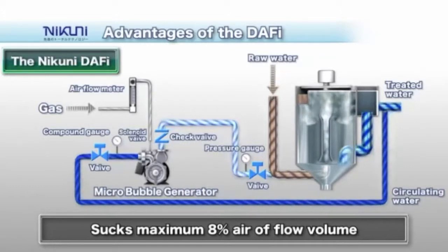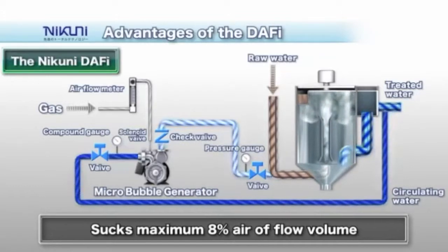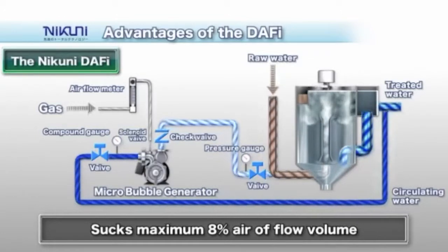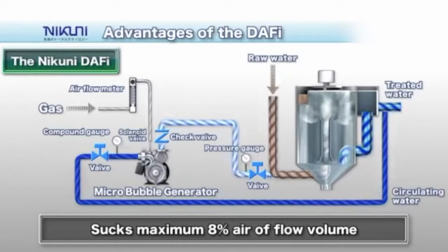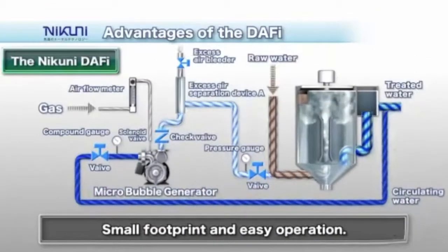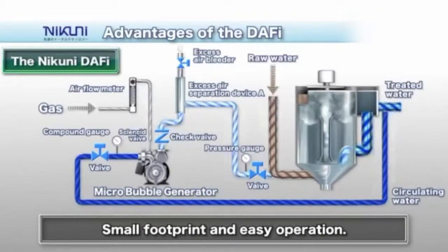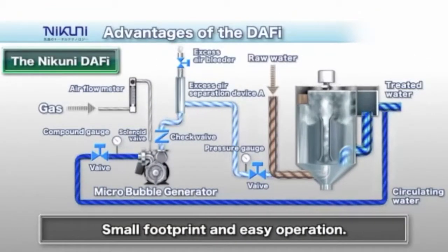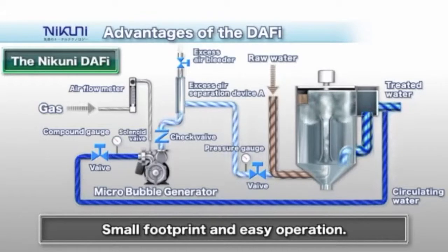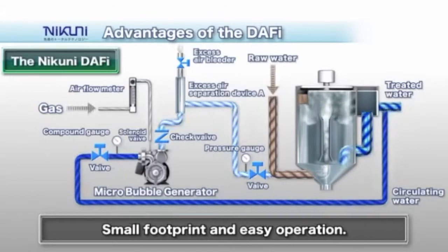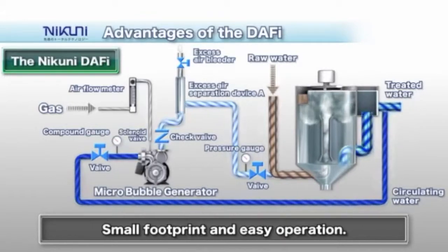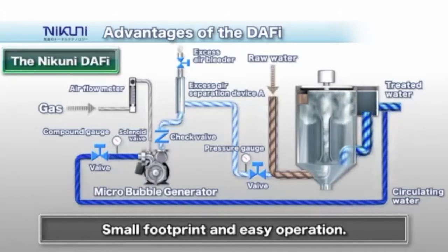To operate the micro bubble generator, first adjust the valve on the discharge side of the pump to the required pressure, then lightly close the valve on the suction side of the pump creating a negative pressure state. Finally, open the valve of the air flow meter to allow the prescribed amount of air to flow in.